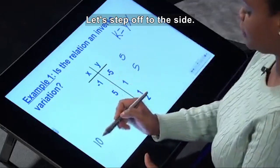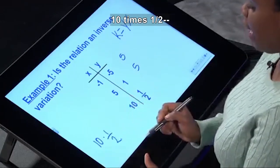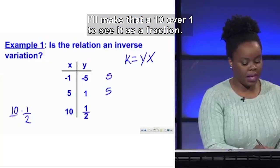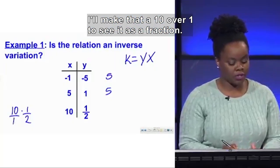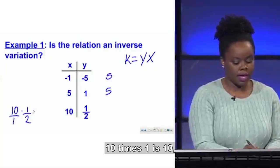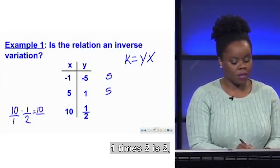10 times 1 half, okay, let's step off to the side. 10 times 1 half, I'll make that 10 a 10 over 1 to see it as a fraction. 10 times 1 is 10. 1 times 2 is 2. 10 divided by 2 is 5.